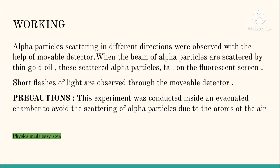When a beam of alpha particles are scattered by thin gold foil, these scattered alpha particles fall on a fluorescent screen and small flashes of light are produced. Then these are observed through the movable detector. But some precautions must be taken that this experiment was conducted inside an evacuator chamber to avoid the scattering of alpha particles due to atoms of the air.